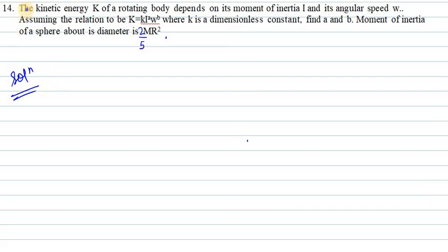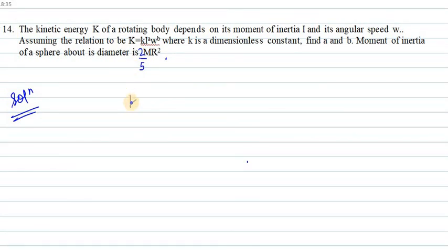Let's start with question number 14. It says the kinetic energy K of a rotating body depends on its moment of inertia and angular speed. On the left-hand side we have kinetic energy, k is a dimensionless quantity, then we have moment of inertia, then angular speed omega.